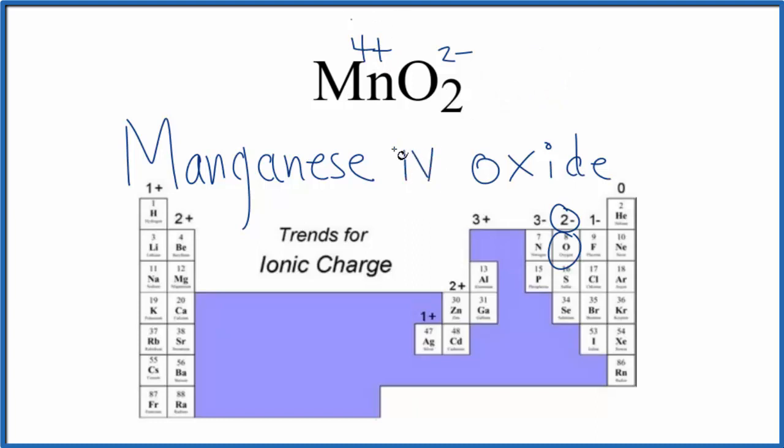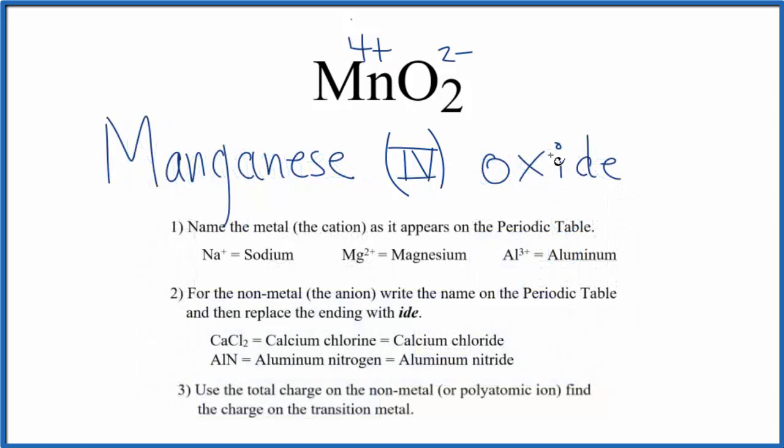Because we have this 4 plus on the manganese, we write the Roman numeral 4 and put that in parentheses between the manganese and the oxide. That makes the name for MnO2, manganese four oxide, where this 4 tells us the charge on the manganese here is 4 plus.